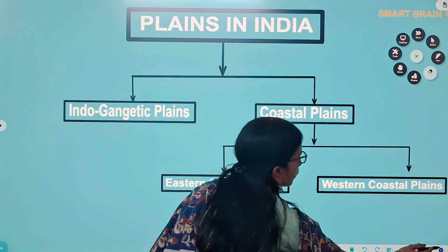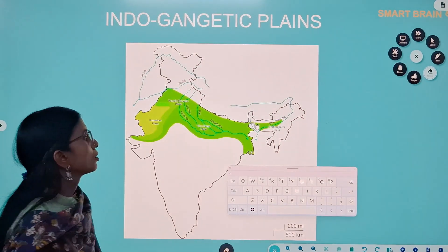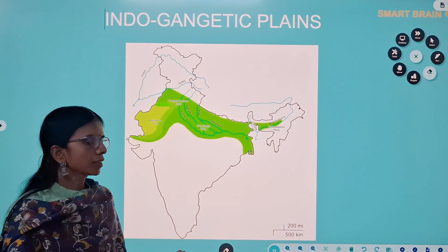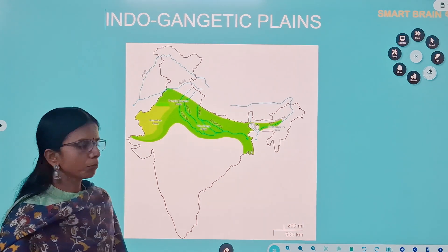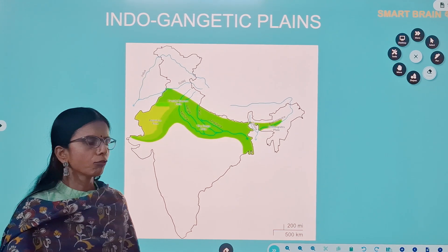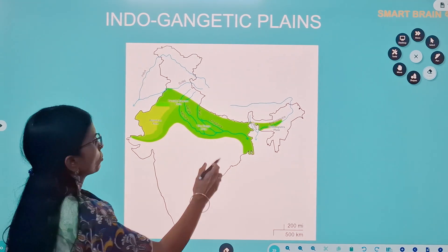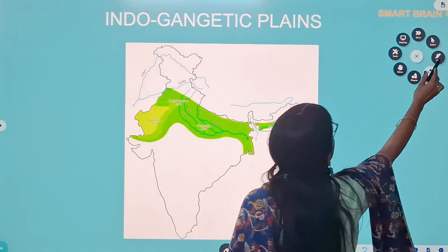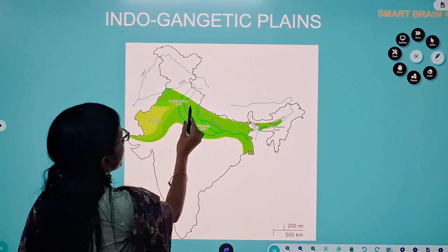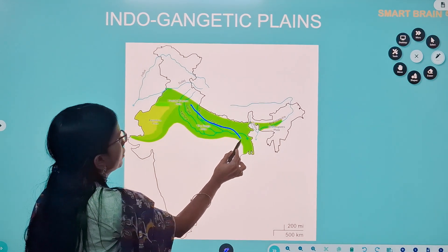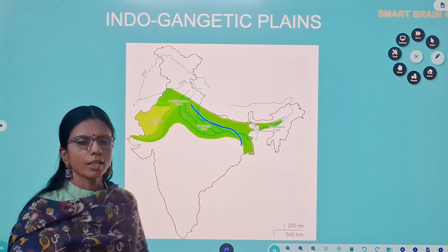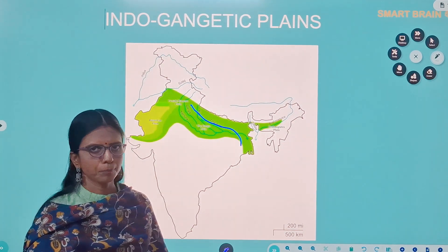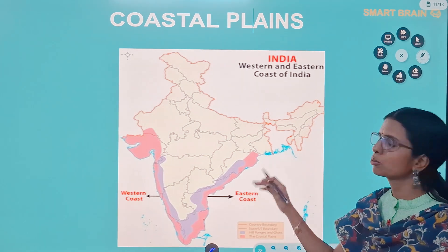This is the image of the Indo-Gangetic plains. The Indus and its tributaries formed the plains of Punjab. The river Ganga flows through the states of Uttar Pradesh, Bihar, and West Bengal. The Indus plains and the Gangetic plains combine to form the Indo-Gangetic plains.